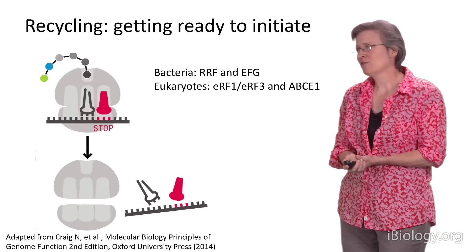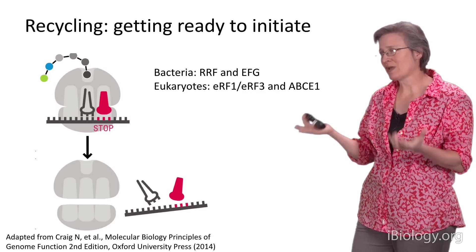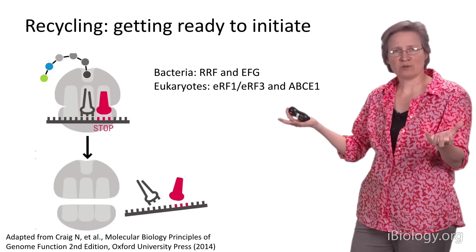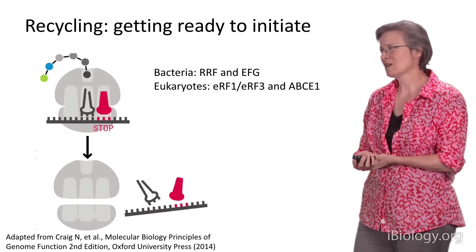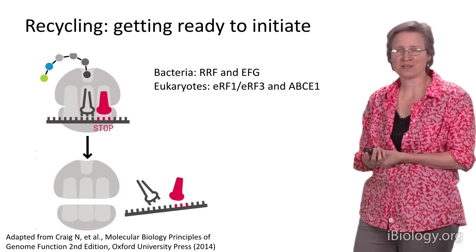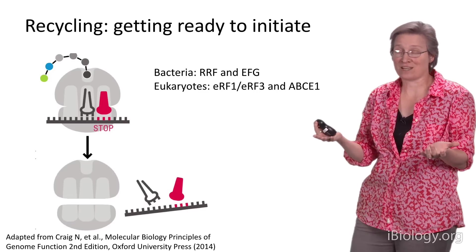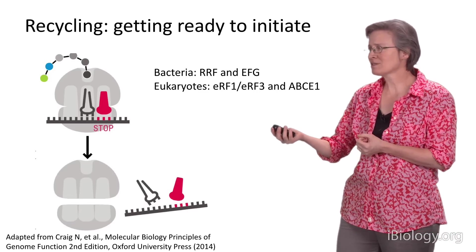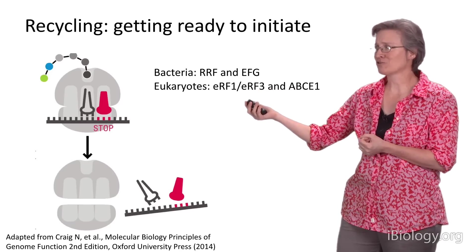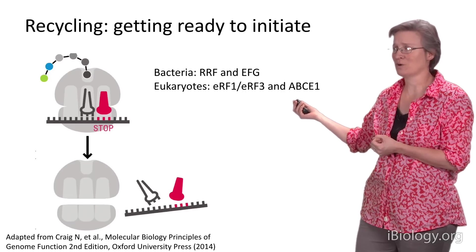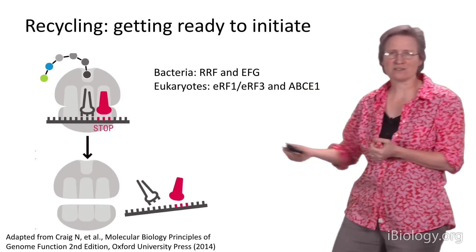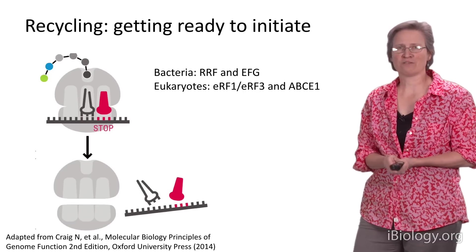Finally, recycling is the process by which, after the polypeptide chain is released, the ribosomal subunits are split apart for another round of initiation. In bacteria, a factor known as RRF along with EF-G again promotes this event. In eukaryotes, termination factors together with an independent factor known as ABCE1 perform this function. In each case, in an energy-dependent reaction, the subunits are split, releasing the messenger RNA, tRNAs, and termination factors, freeing the subunits for the next round of protein synthesis.